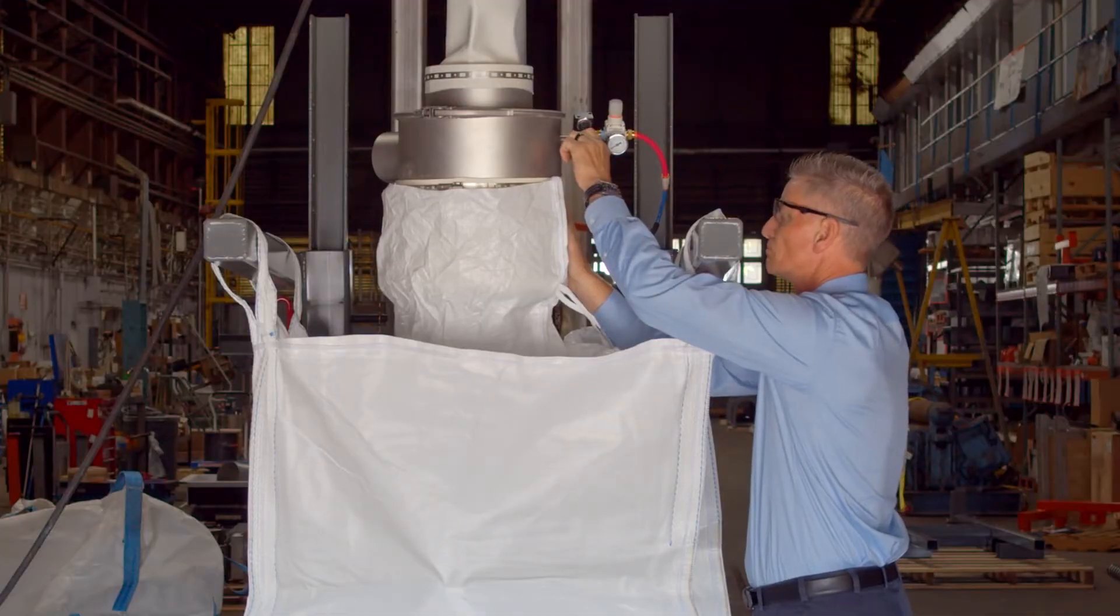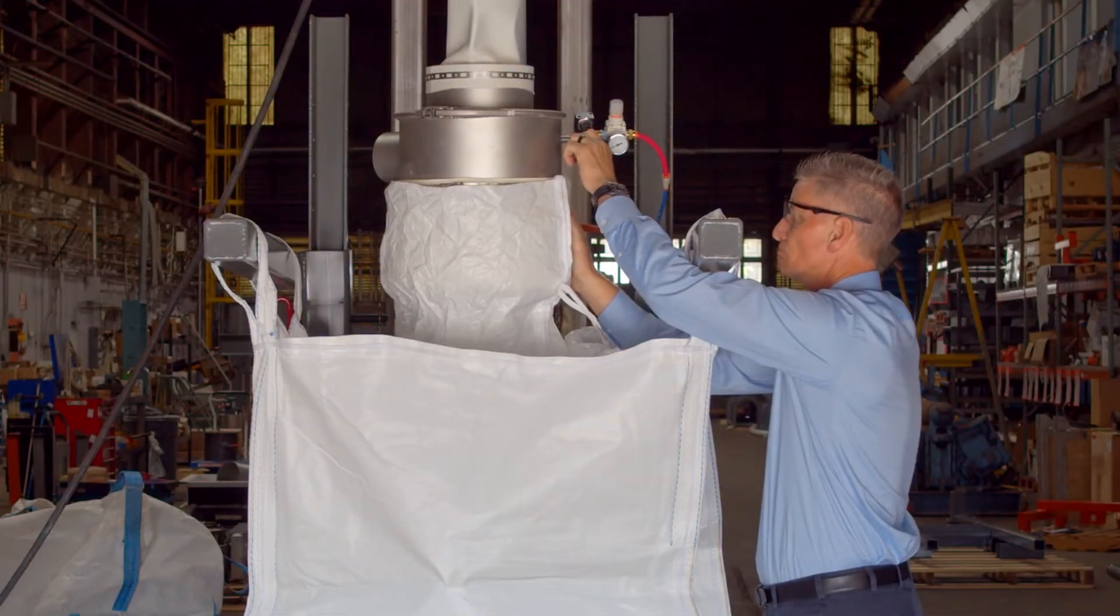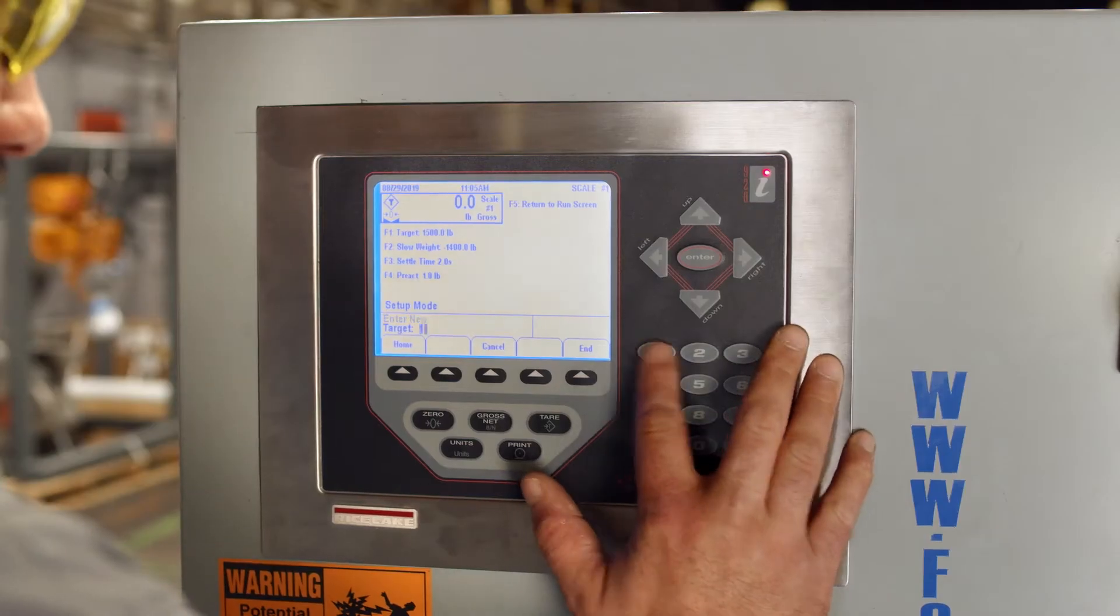Once the bag height has been adjusted and bag spout sealed, the operator enters the desired weight into the controller.